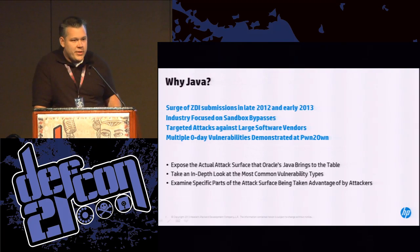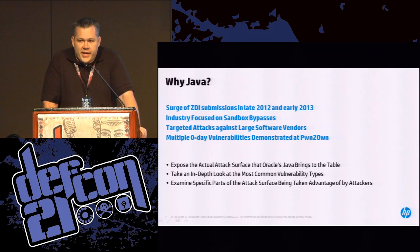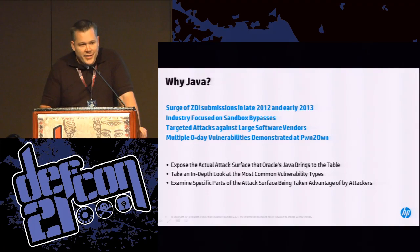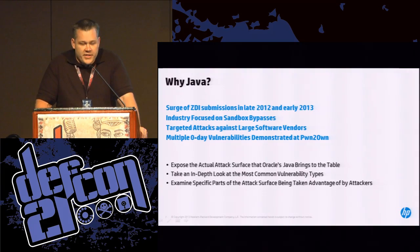So why did we choose Java to look at? We wanted to get a more granular insight of the attack surface itself because we had a surge of submissions in late 2012 and early 2013. At the time the industry was focused on the sandbox bypass issue — we wanted to look independently at the framework itself and see if that was actually the case.